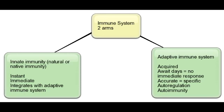What are all the components of innate immunity? The components of innate immunity include neutrophils, macrophages, dendritic cells, natural killer cells of lymphoid origin, and complement.